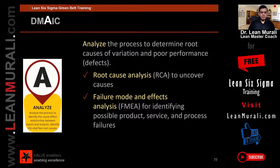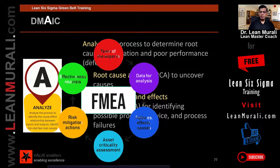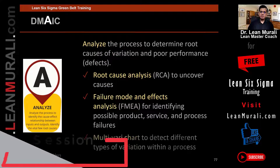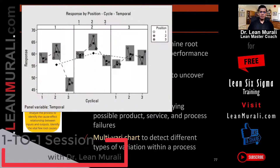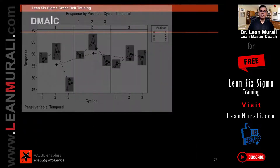We also look at how to make sure you don't have the risk of failing — we do what is called FMEA, Failure Modes and Effects Analysis, for identifying possible product, service, and process failures. I'm only introducing these tools now. We will go into the depth of root cause analysis, FMEA, multivariate charts, and similar tools during the course of this session.